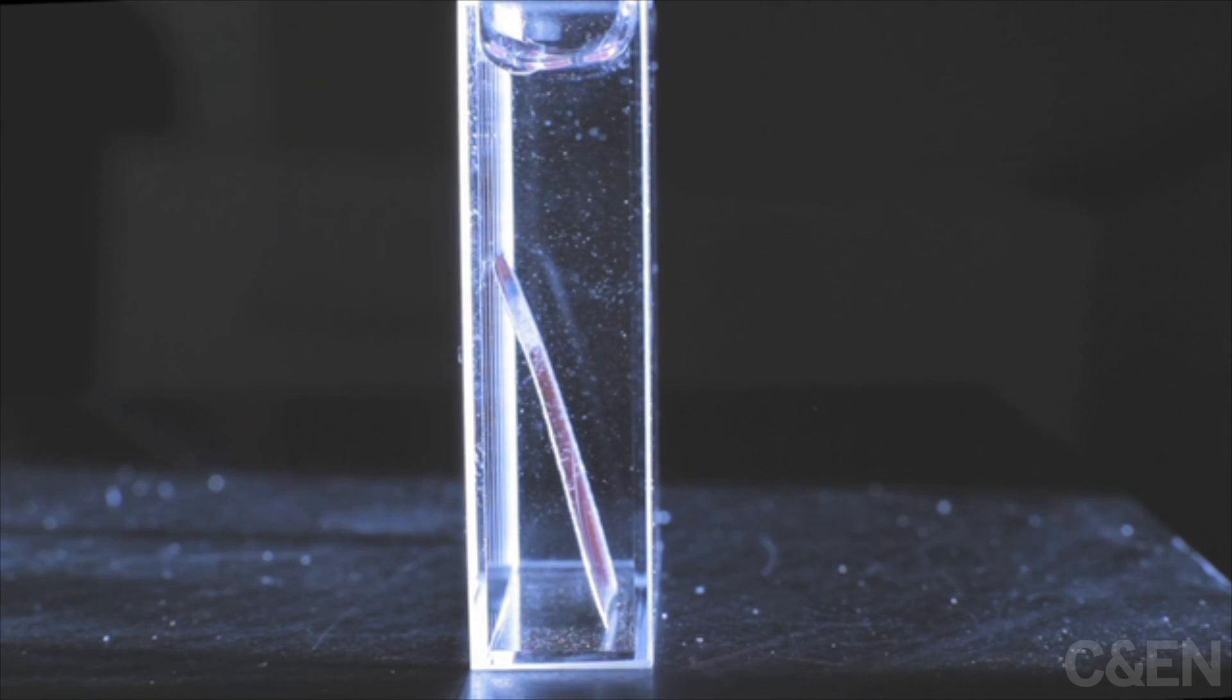This solar cell device mimics the ability of a leaf to convert sunlight into usable energy. It's the brainchild of a team led by MIT's Daniel G. Nocera, working in conjunction with researchers at Sun Catalytics, a company that Nocera founded.